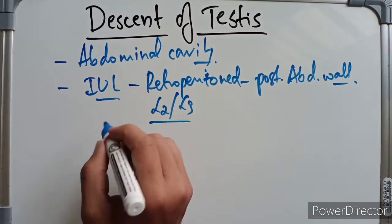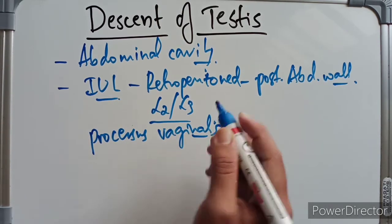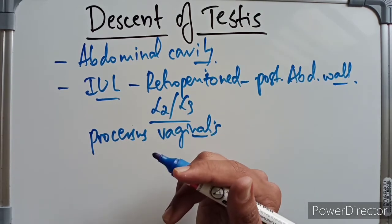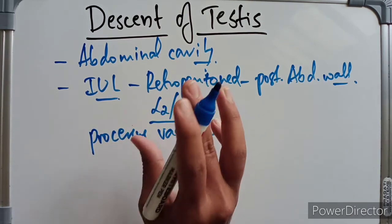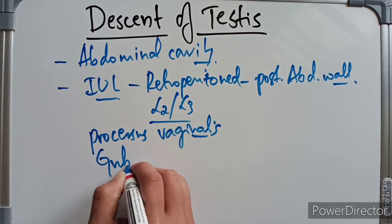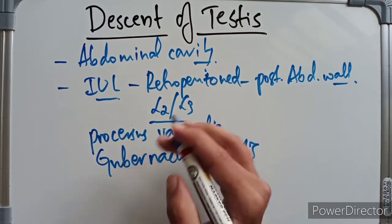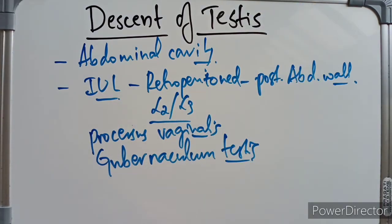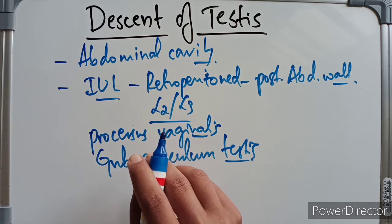A fold of the peritoneum called the processus vaginalis will extend in front of the testis and reach the scrotum. Just after the formation of the processus vaginalis, a chord-like fibromuscular band called the gubernaculum testis will also develop, connecting the mesonephric duct and the lower pole of the testis, and will pull the testis toward the scrotum. Differential body growth in the embryo and fetus will result in the descent of testis from the abdominal cavity to the scrotum.